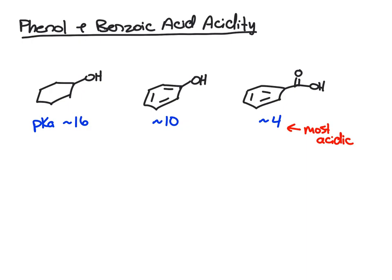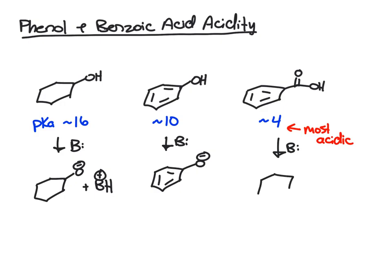Hopefully you remember from organic one that acidity trends can be rationalized by conjugate base stability. For all of these, if you react with a base, the base will come up and take the proton. Now we get our conjugate base and our conjugate acid is BH+. If we react with some base, we can draw the conjugate bases of the acids.